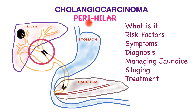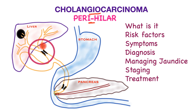The focus of this video is perihilar cholangiocarcinoma. Cholangiocarcinoma refers to bile duct cancers. The perihilar location — at the root of the liver where the bile duct and blood vessels enter the liver — is the commonest site of cancers originating in the bile duct. We will find out what it is, the risk factors, the symptoms, the diagnosis, managing jaundice, staging the disease, and the treatment options.